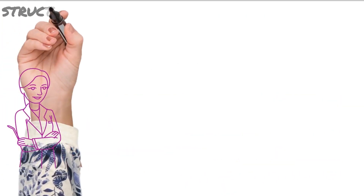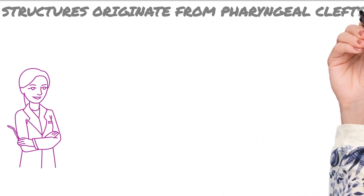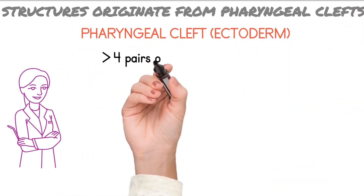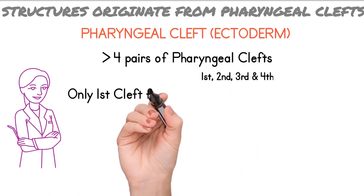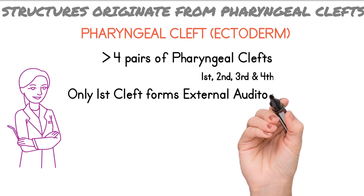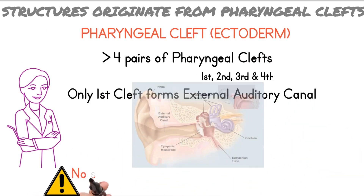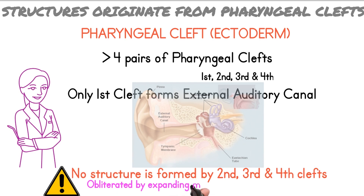Now the structures formed from the pharyngeal clefts: there are a total of four pairs of pharyngeal clefts, which are formed from ectoderm. Out of four clefts, only the first pair of pharyngeal cleft gives rise to the external auditory canal. Point to remember is that no other structure is formed by the second, third, or fourth clefts — these are obliterated by mesenchyme within the arches.